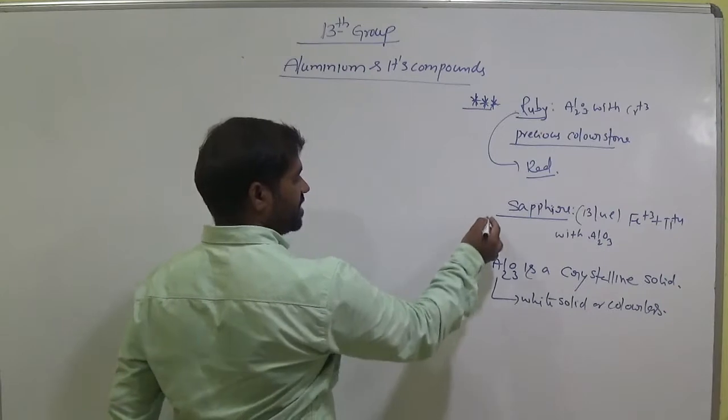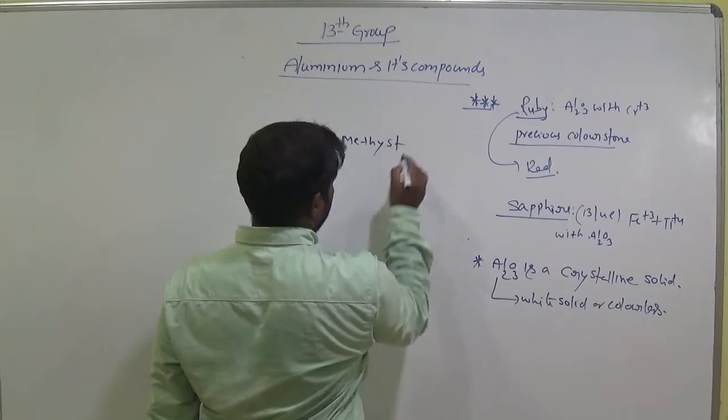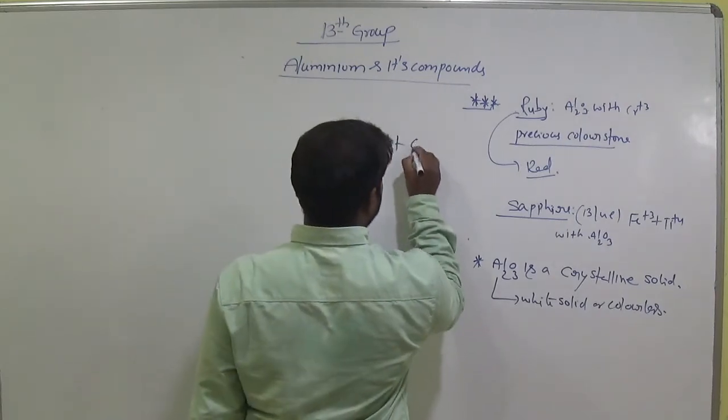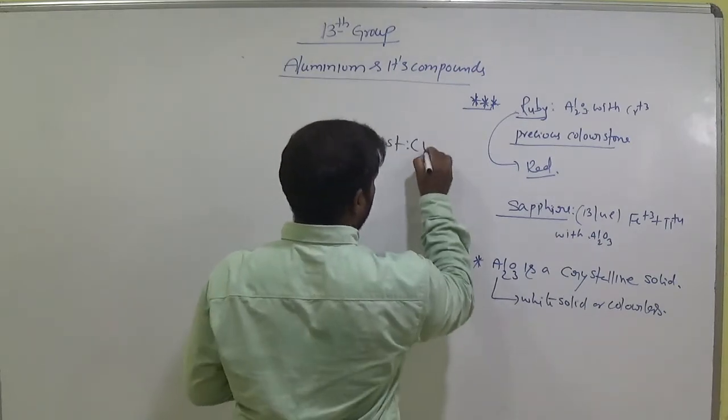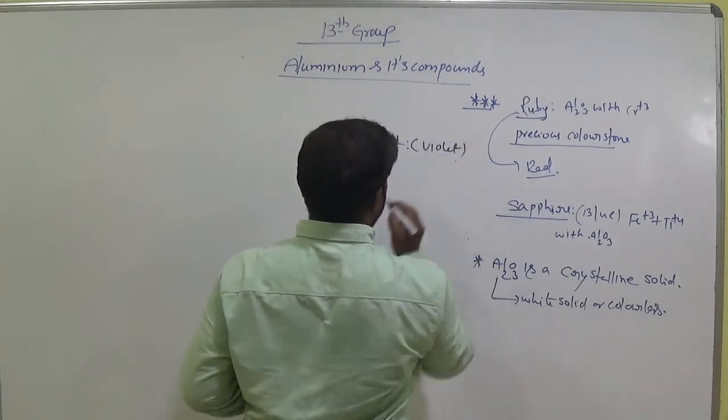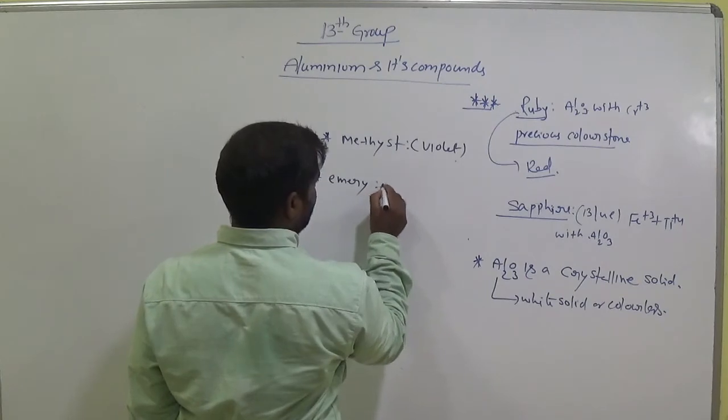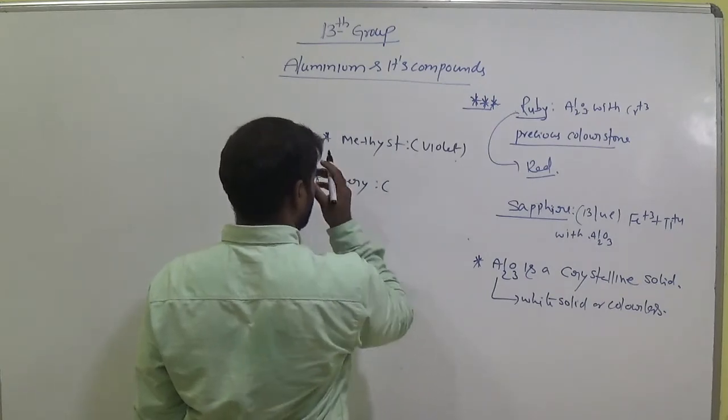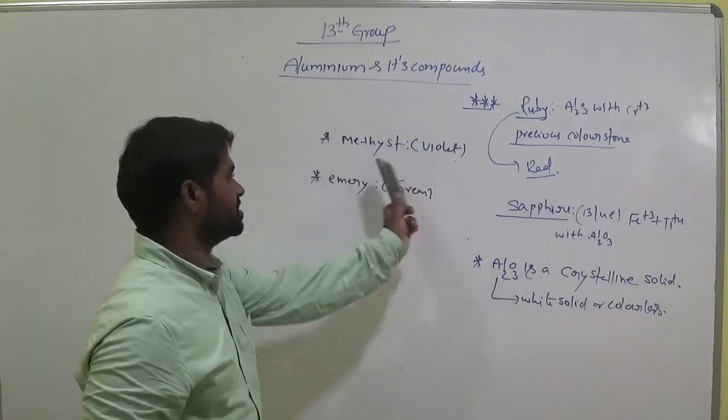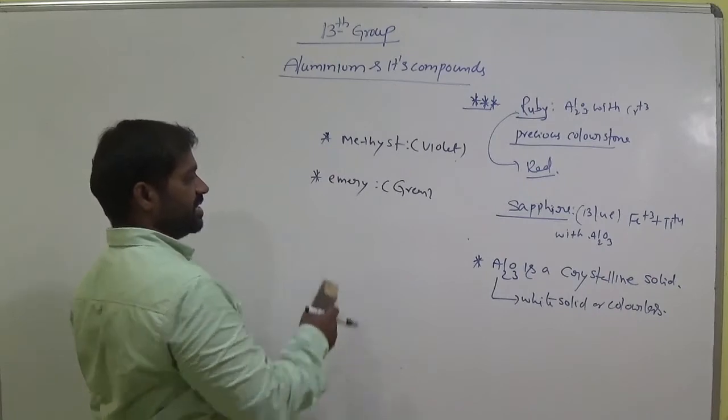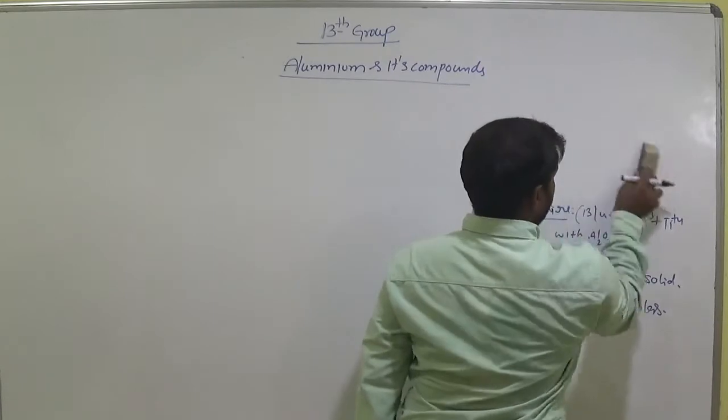And one more compound here. Amethyst, this is violet color stone, violet color. Emery is there, that is green color stone. These are also like this: Amethyst is violet color, Emery is green color stones. Keep it in our mind. This is just fundamental information.